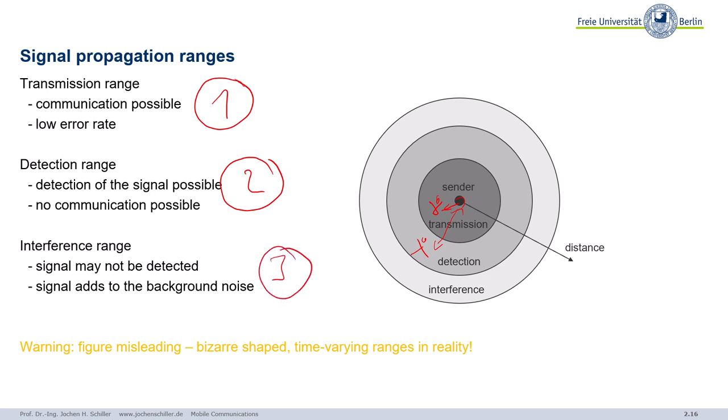And finally, we have a so-called interference range. That means you cannot even detect that there's a signal, but this signal at least adds to a certain background noise. So you cannot really say, okay, this is a wireless LAN signal or a cellular base station, but there's some background noise. And then, there's something around this interference range where you do not even have the noise from this sender.